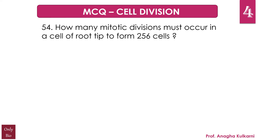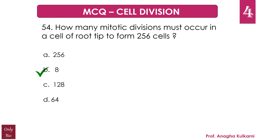Question number 54: How many mitotic divisions must occur in a cell of the root tip to form 256 cells? A. 256, B. 8, C. 128, D. 64. The correct answer is B, 8. You might be confused here — please understand. It says a single cell of the root tip. One cell undergoing mitosis for the first time produces two cells, second time four cells. So if you factorize 256, what you get is the answer, that is 8.